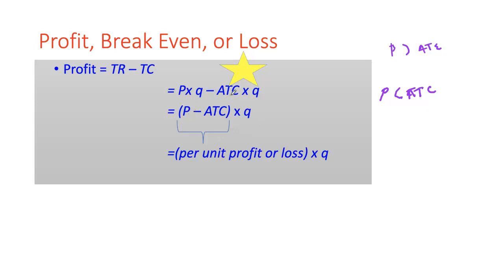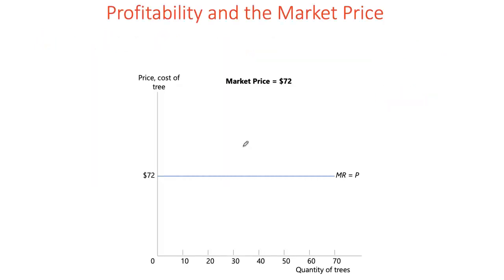Your optimal quantity could correspond to any of these three situations — maximizing profits as a positive number, minimizing losses where losses are minimum possible, or earning zero economic profits. Let's start with a firm earning positive economic profits at price $72. Step one: find the optimal quantity where price equals marginal cost by superimposing the marginal cost curve, giving us optimal quantity of 50 trees. Next, superimpose the ATC curve to see per unit profit.